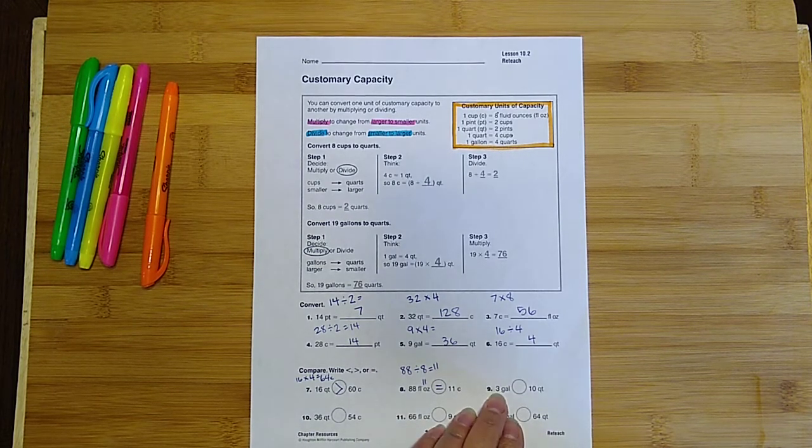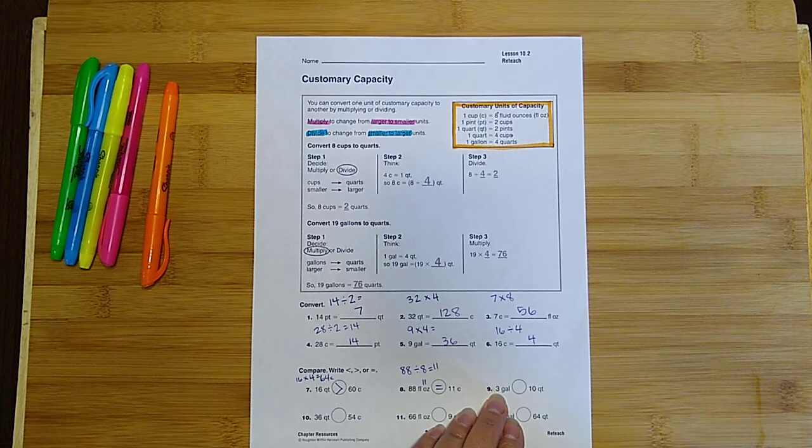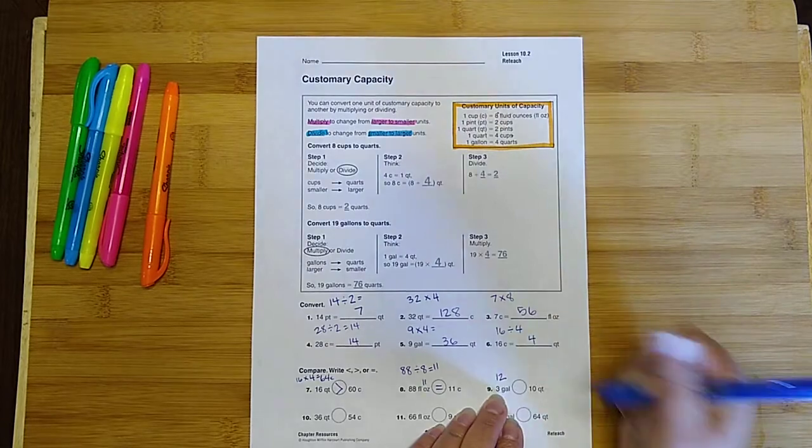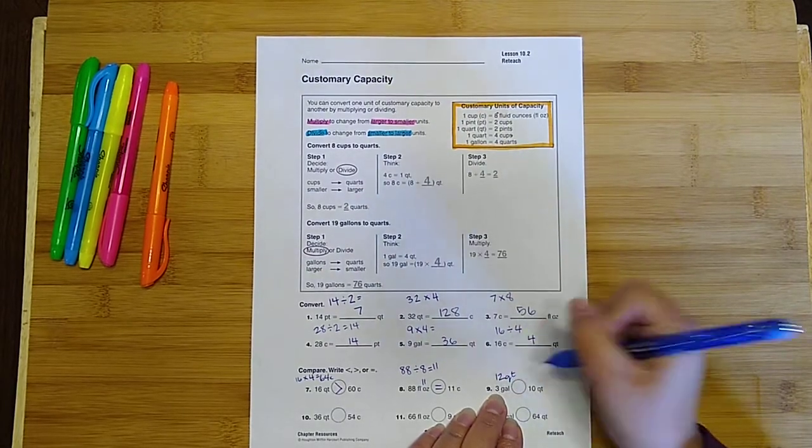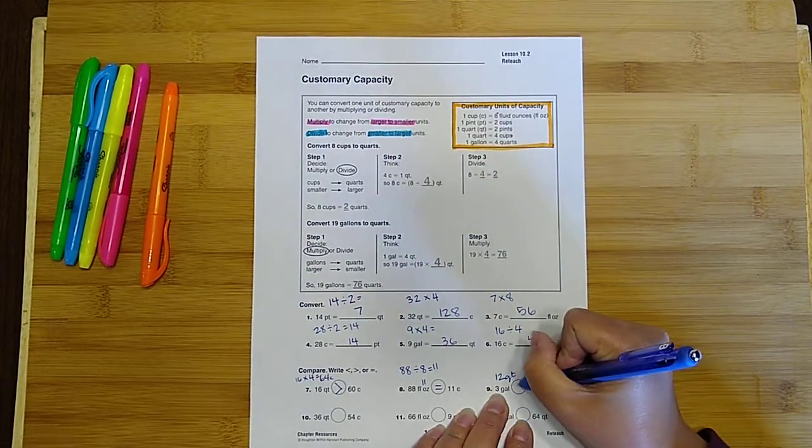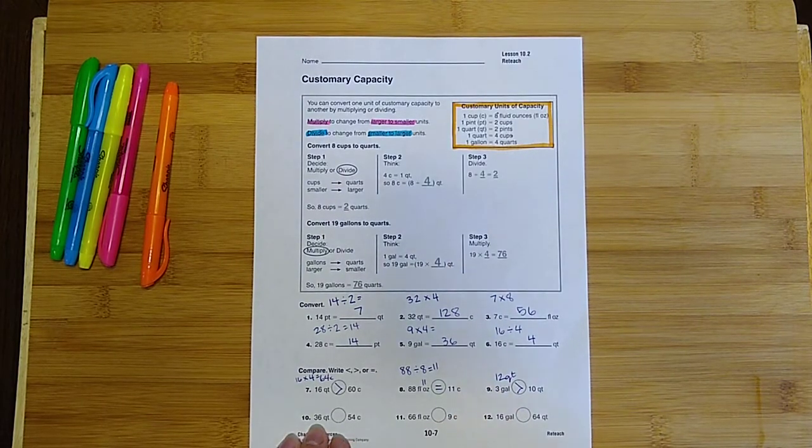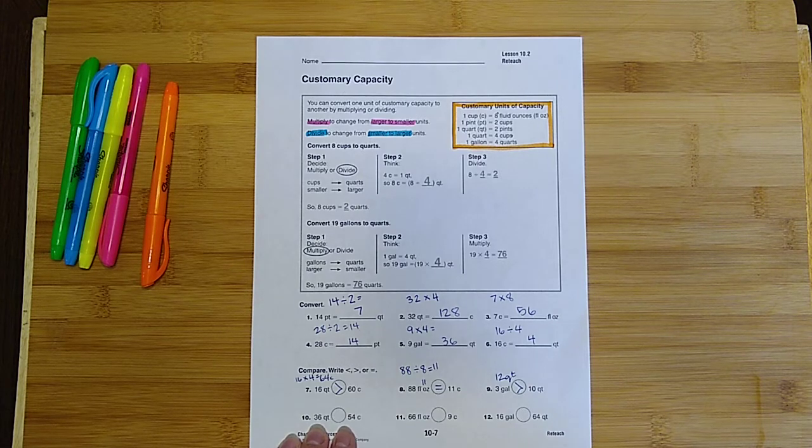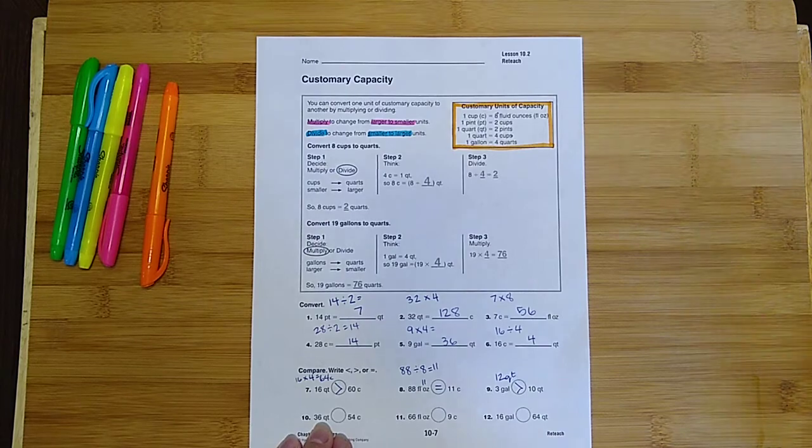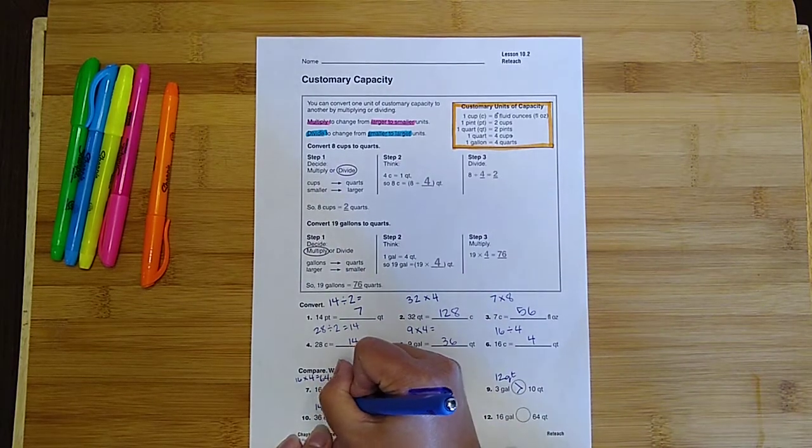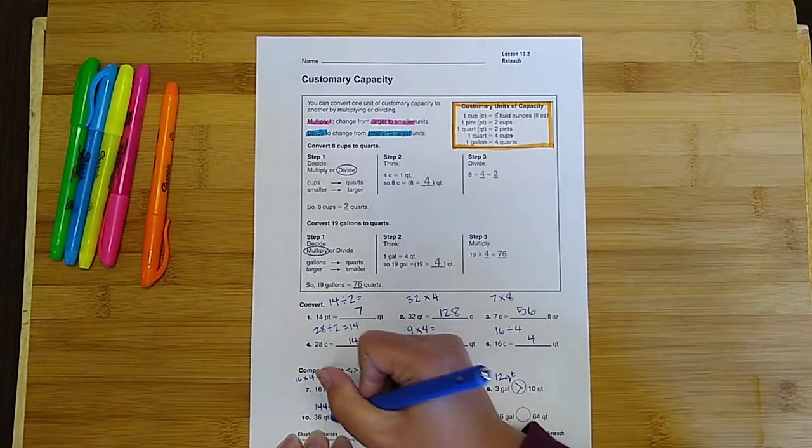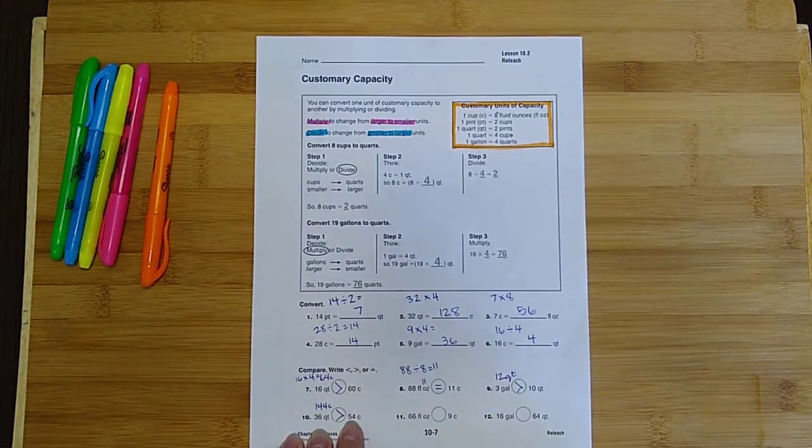So over here, I converted my gallons into quarts. 3 gallons is equal to 12 quarts. And I know that 12 is greater than 10, so I'm going to have the greater than symbol in there. On number 10, I did 36 times 4, because there's four cups in every quart, and I got the number 144 cups on that side, which is definitely greater than 54.